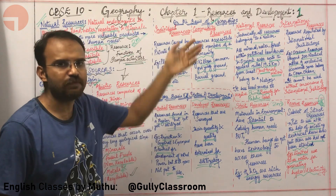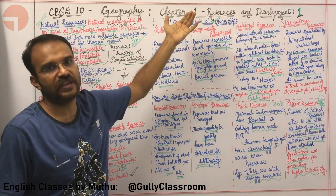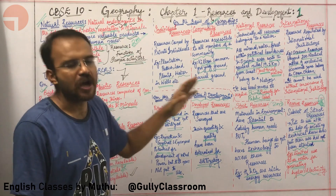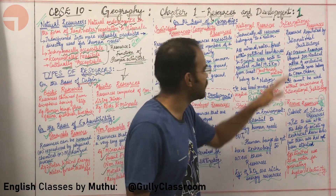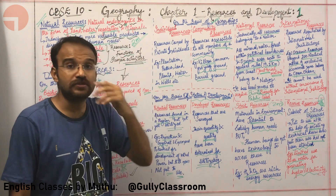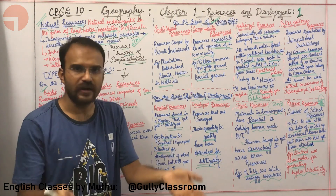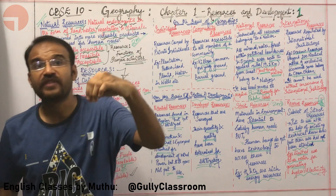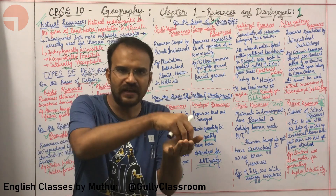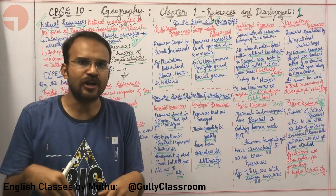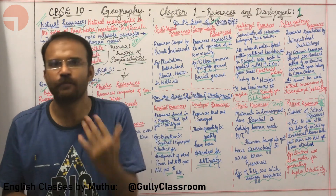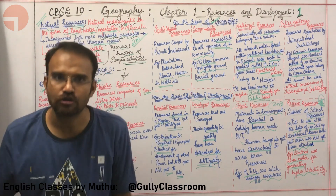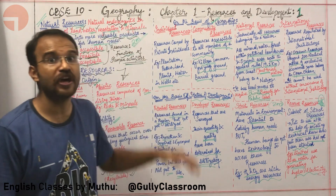The third type of classification is based on ownership. Based on ownership, there are individual resources, community resources, national resources and international resources. Individual resources are owned by a particular individual. For example, if you are doing farming in your own land, that particular land and the water in the well of that land is your own individual resource.